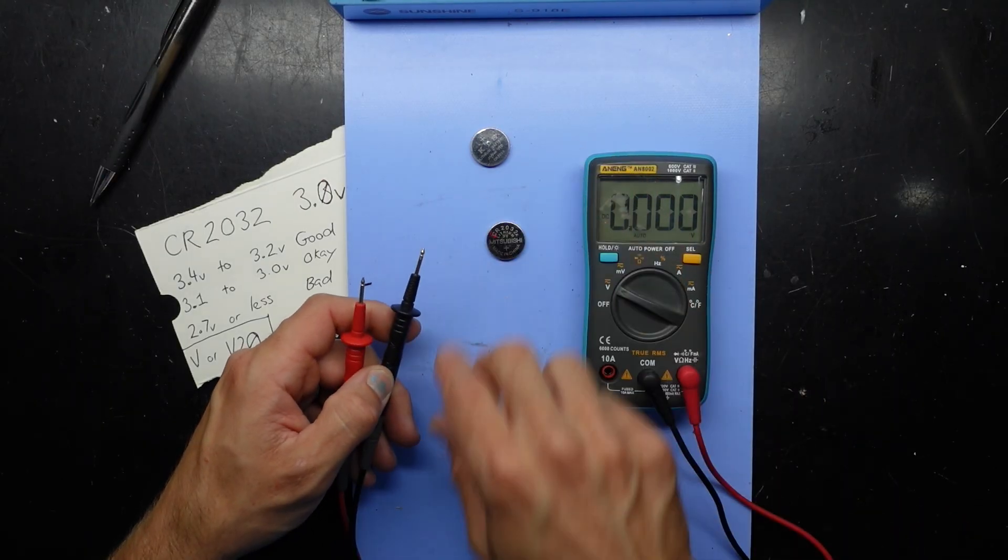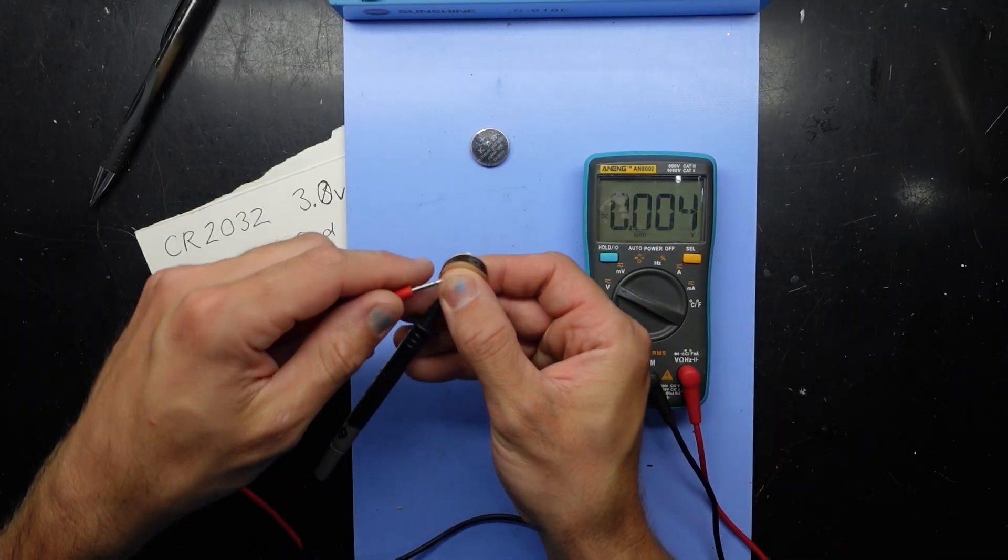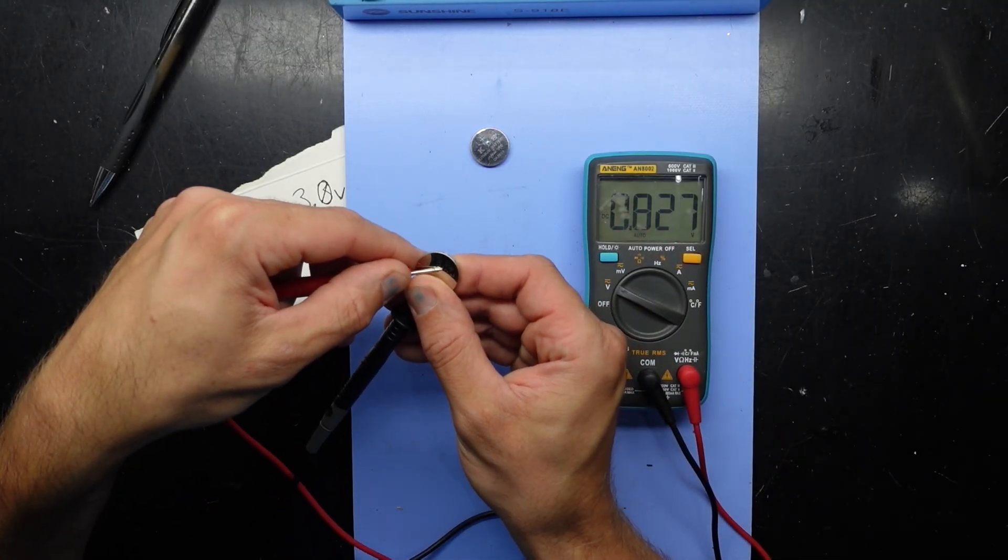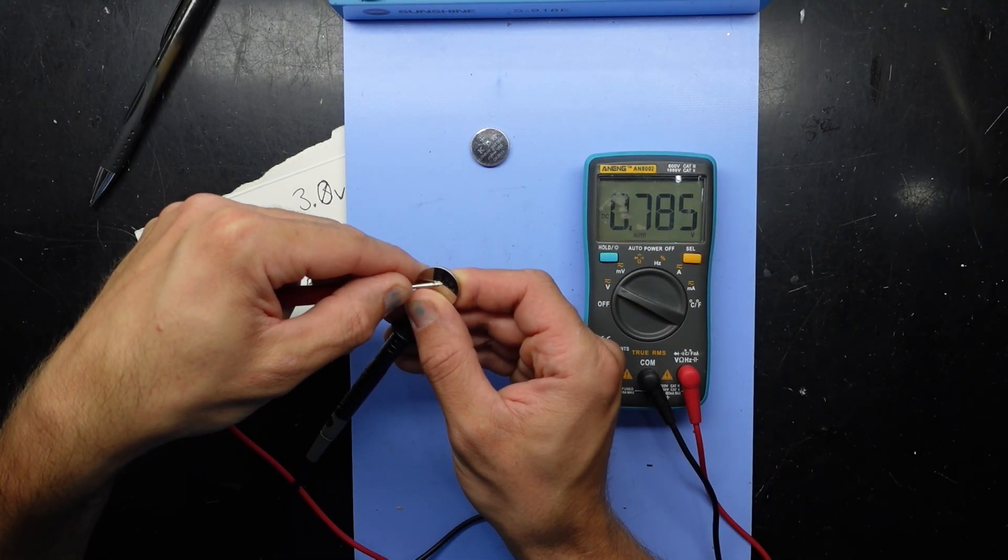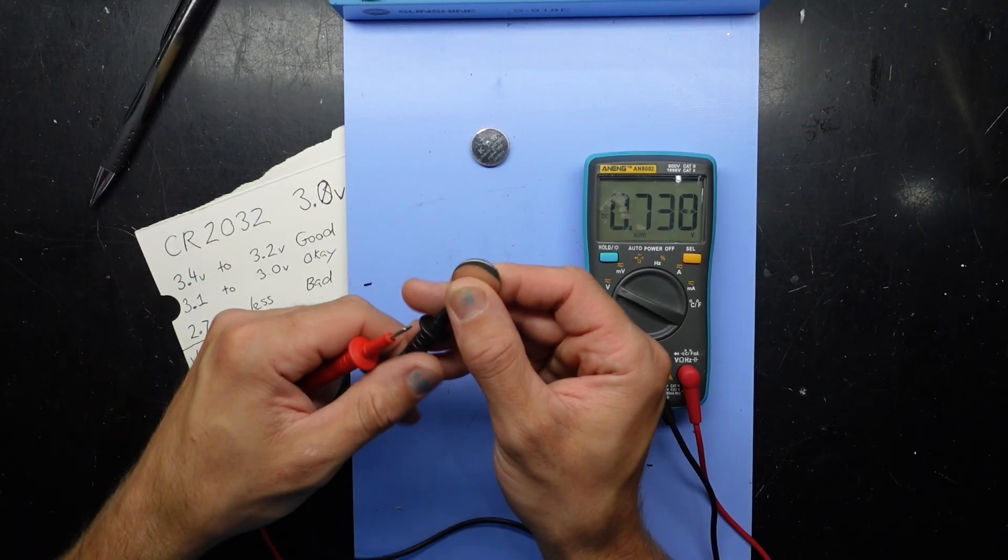From here if I put the black on the bottom and hold the red on the top, this one's coming up as 0.78 and declining. I know that because this one is a bad battery.